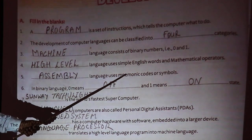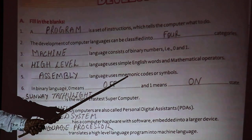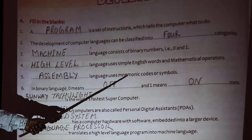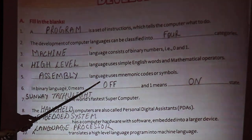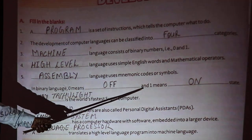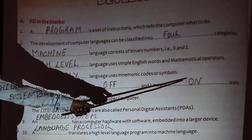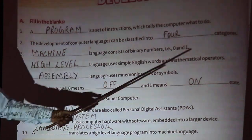Assembly language uses mnemonics like add and subtract. In binary language, 0 means off and 1 means on state.